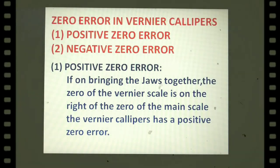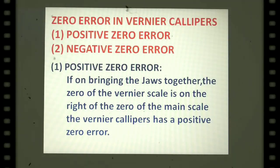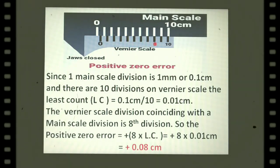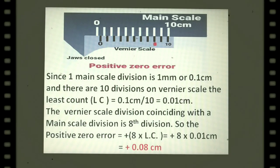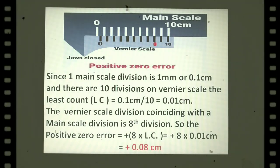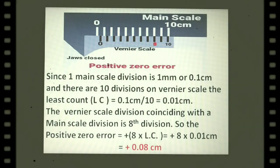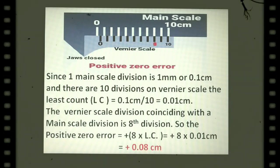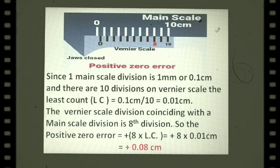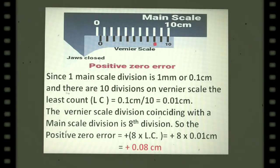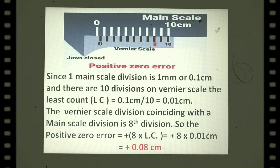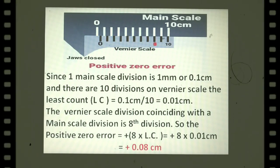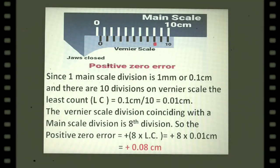Positive zero error: if on bringing the jaws together the zero of the vernier scale is to the right of the zero of the main scale, the vernier has a positive zero error. Since one main scale division is 1 mm or 0.1 cm and there are 10 vernier divisions, the least count is 0.1 cm divided by 10, which is 0.01 cm. The coinciding division here is the eighth division (marked red). So the positive zero error equals plus 8 times 0.01 cm, giving plus 0.08 cm.